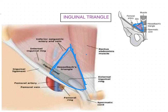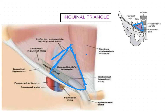Laterally, the superior lateral border is formed by the inferior epigastric artery. Here we can find these epigastric vessels, which we also saw in relation to the inguinal canal. So this forms the lateral boundary of the inguinal triangle.